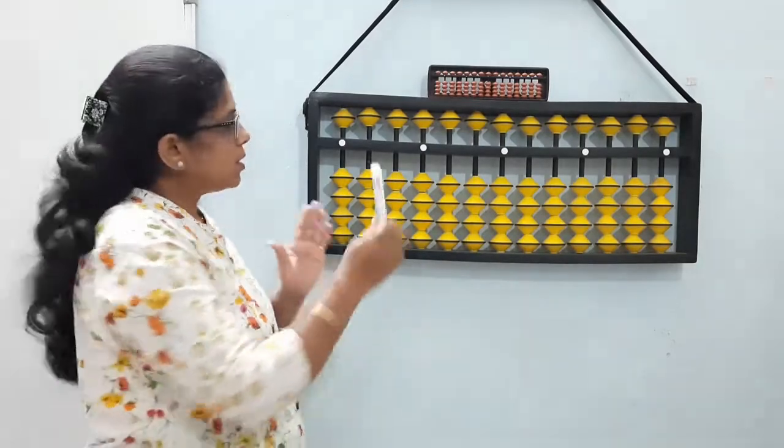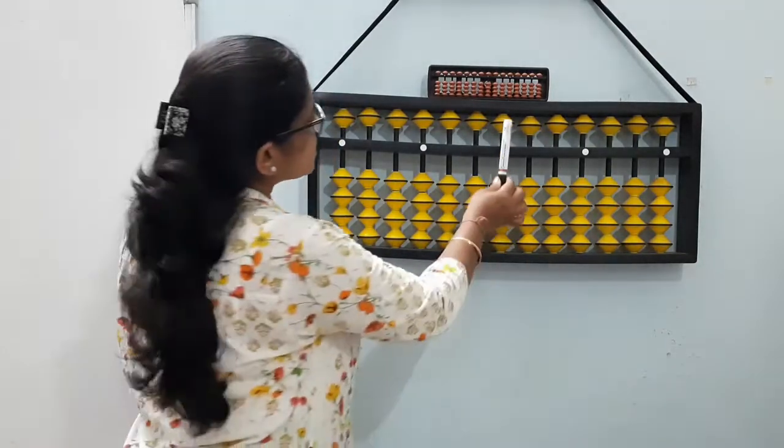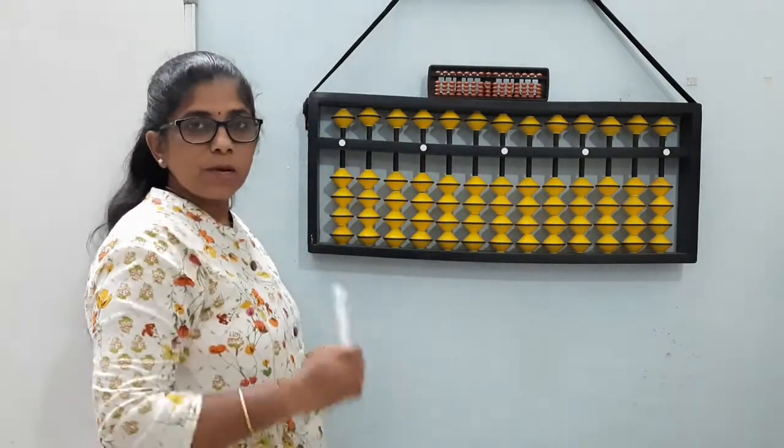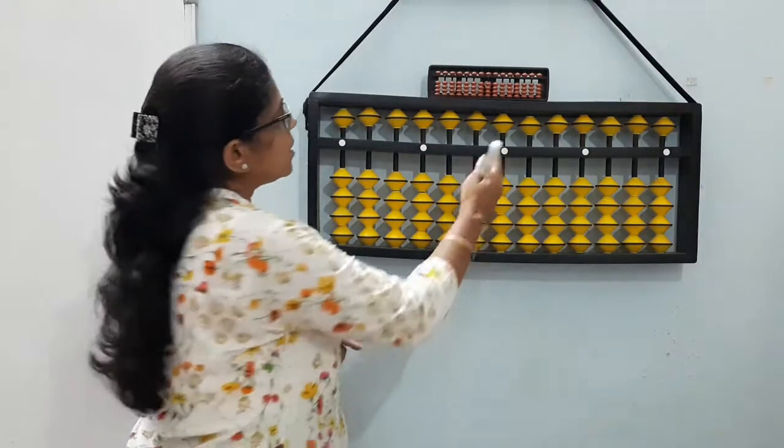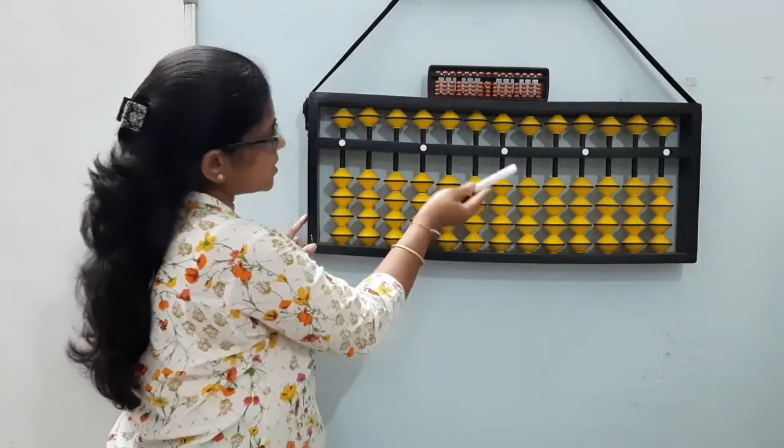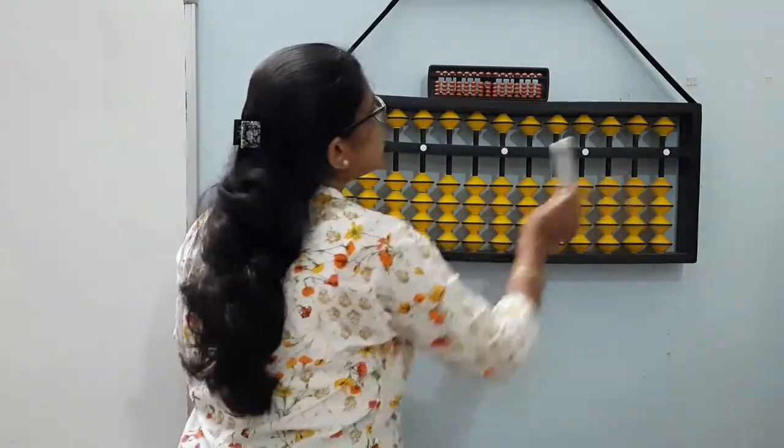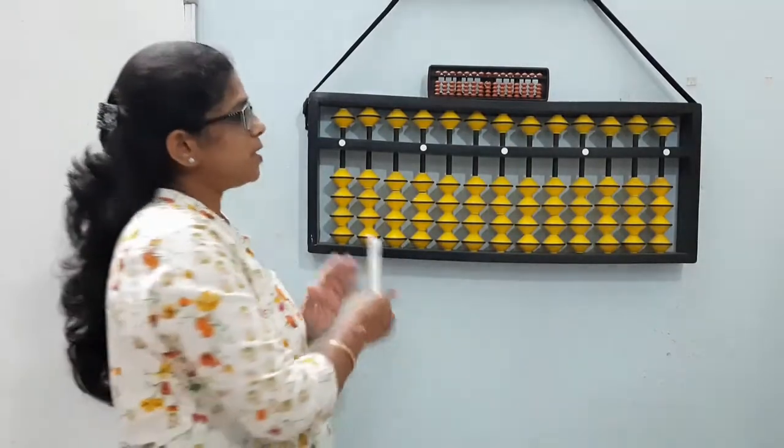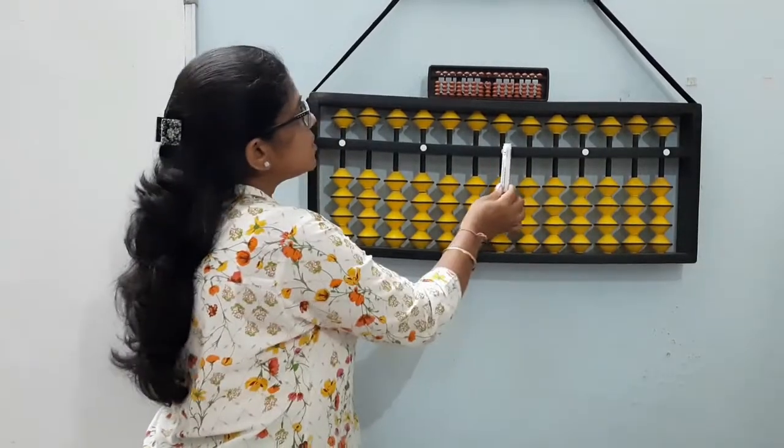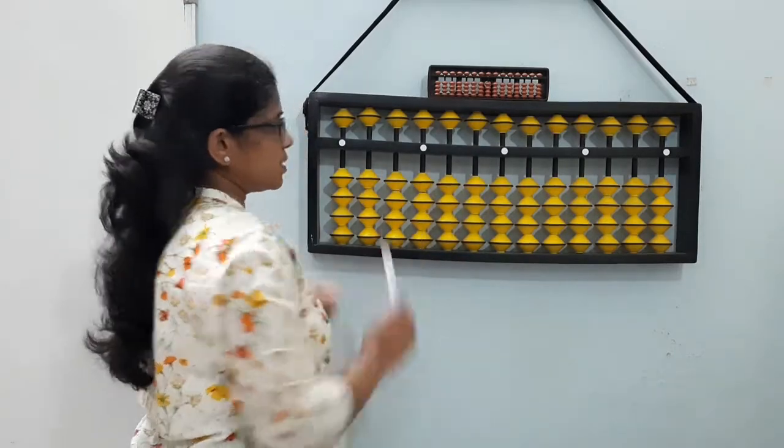So what are these dots? These dots represent the place value. This first center dot is nothing but our unit space, single digit. Then this one, next place is 10th place. This is 100th place. And this part we use later in the higher levels for decimal sums. So we call it as the decimal part. So here this is unit space, 10th place, 100th place.